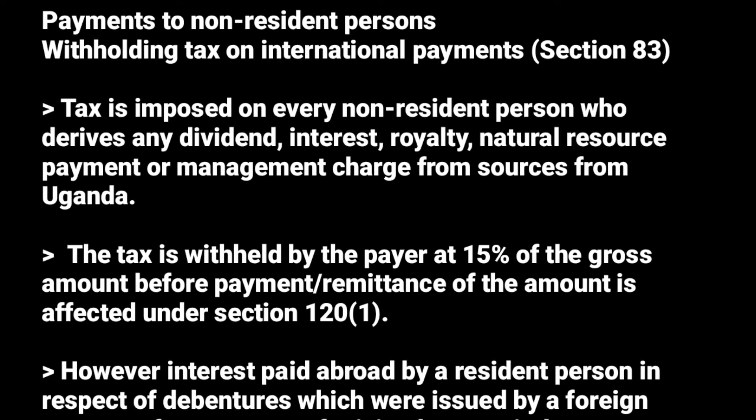Any non-resident person who derives money from Uganda — in the form of a dividend (if they have shares in a company), interest (if they offered a loan to someone), royalty (from things like someone using their copyright), natural resource payments, or a management charge — the payer, before paying that money to the non-resident individual, has an obligation to first withhold 15% of the money, which must then be remitted to URA.